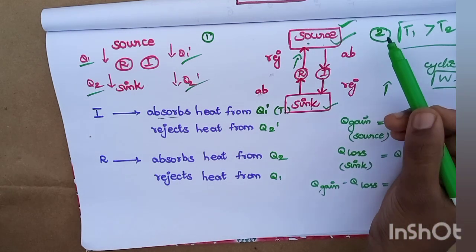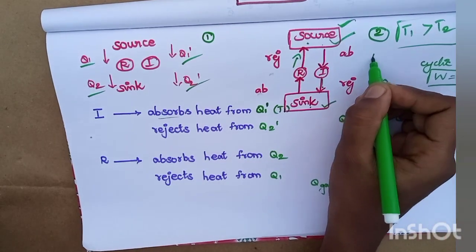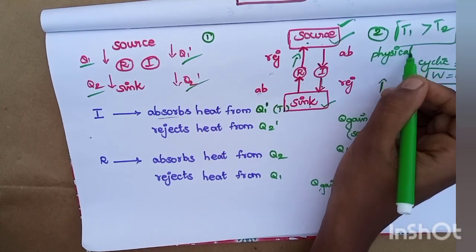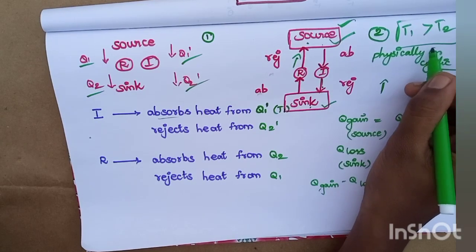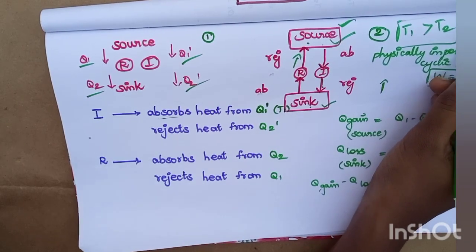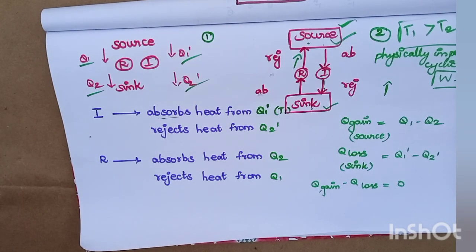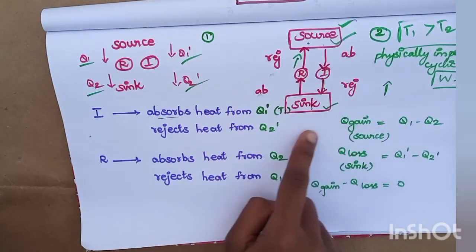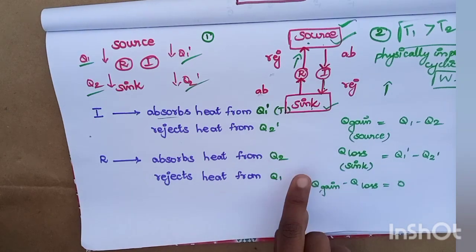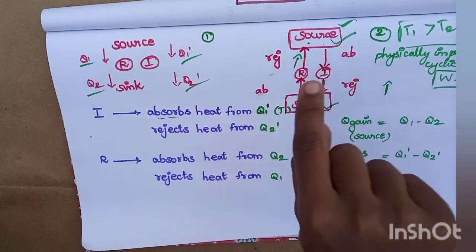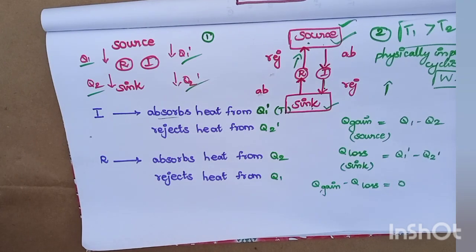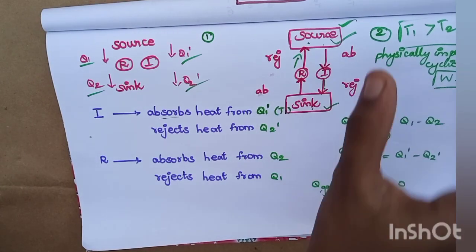But the assumption is that it is physically impossible. This is a violation of the second law of thermodynamics. The assumption is that heat transfers in reverse to the engine, and then heat transfers to the source — but that is physically impossible. So that is what we are proving.